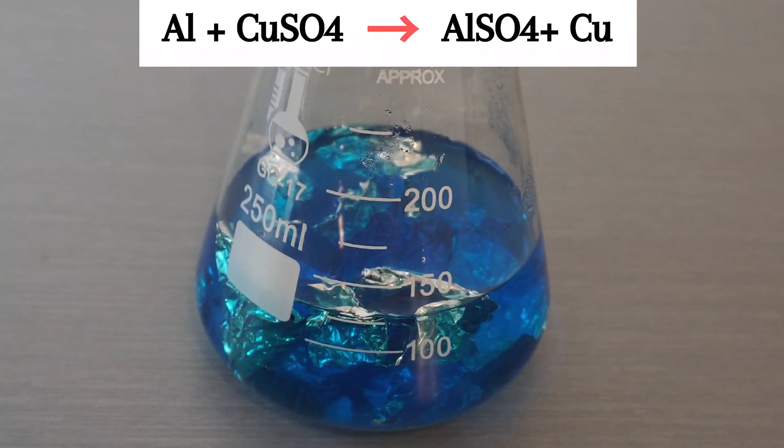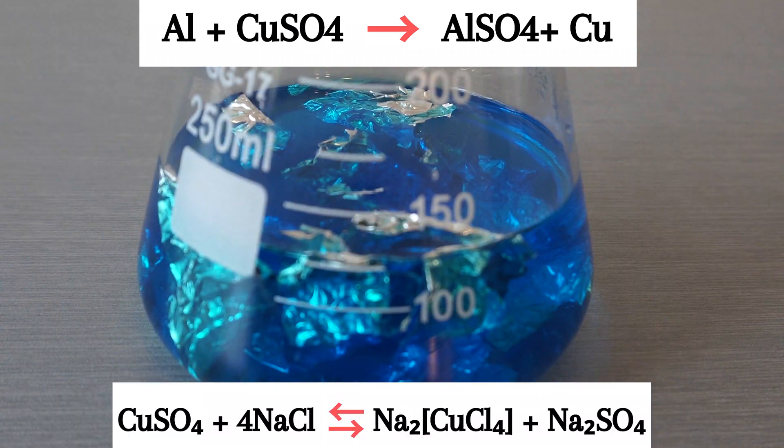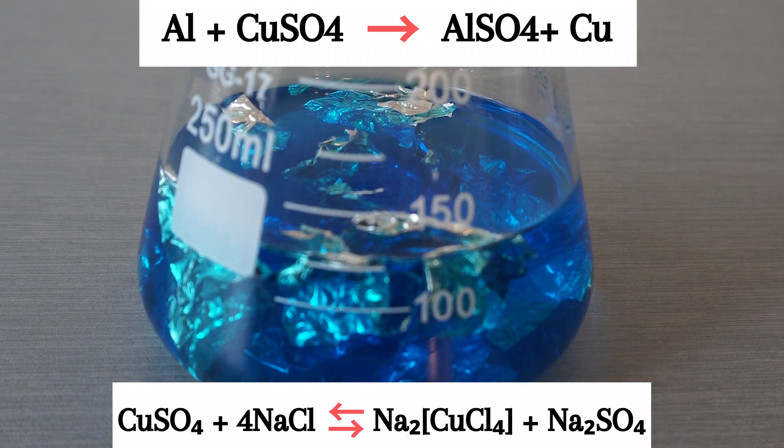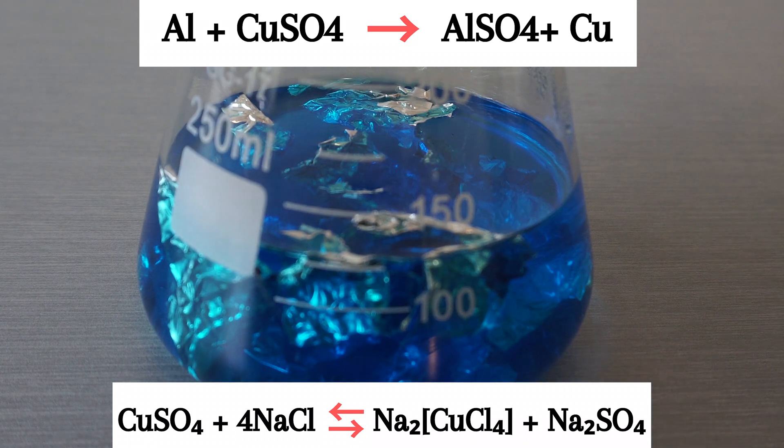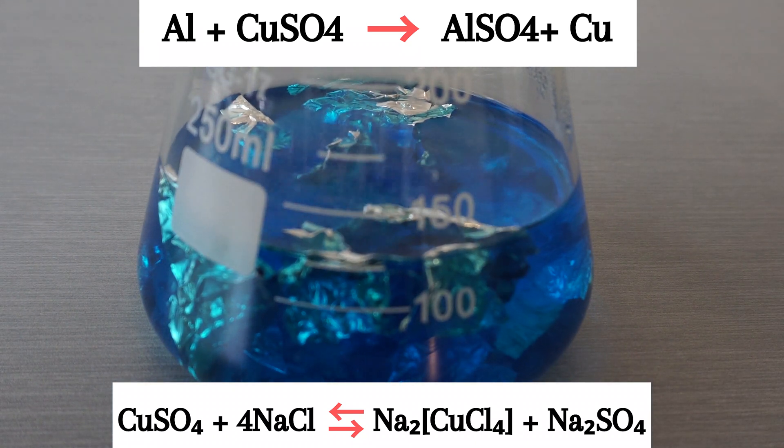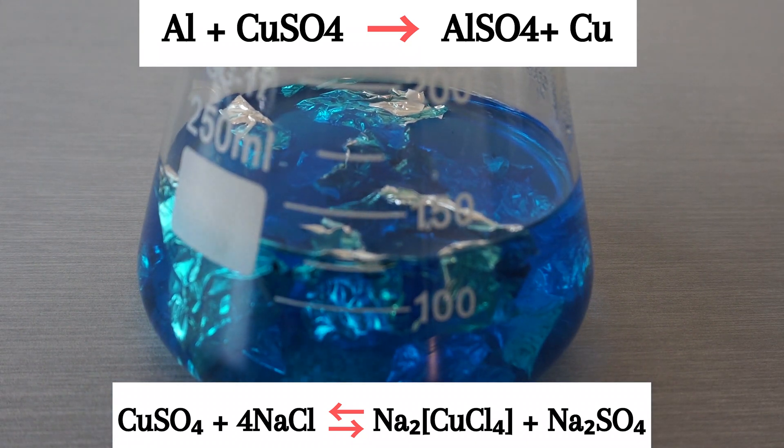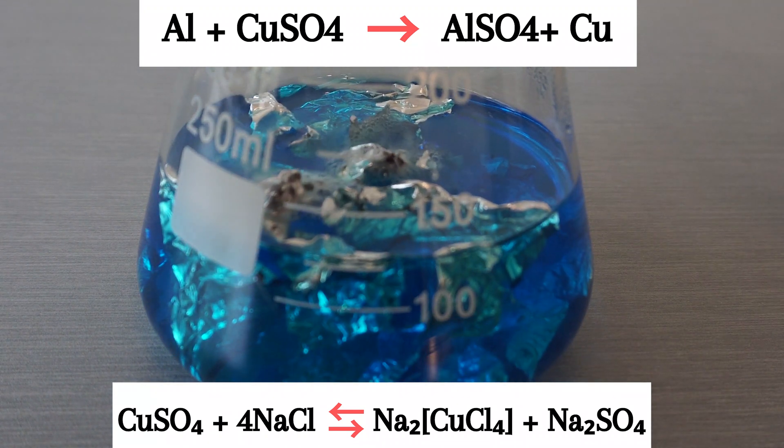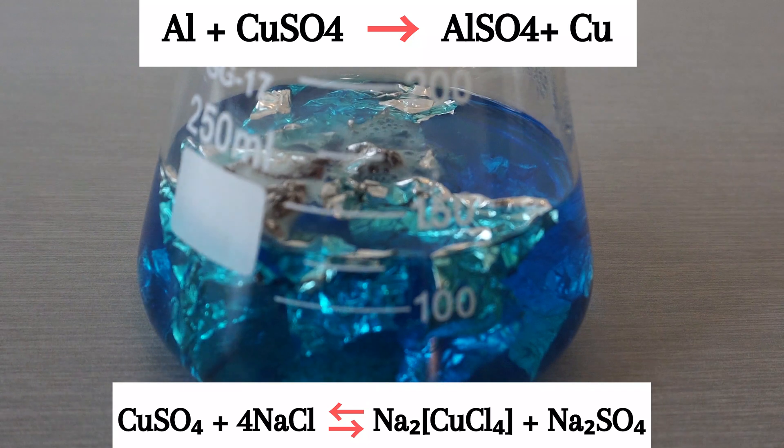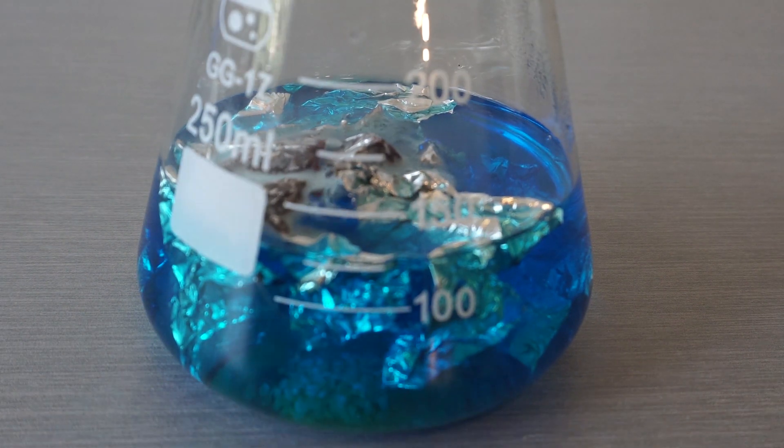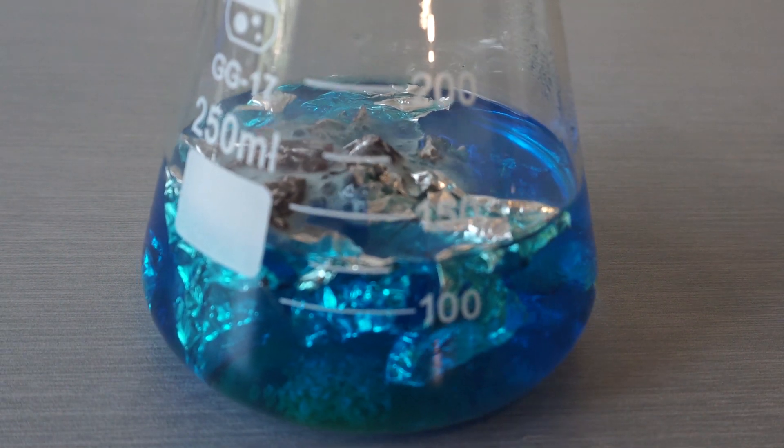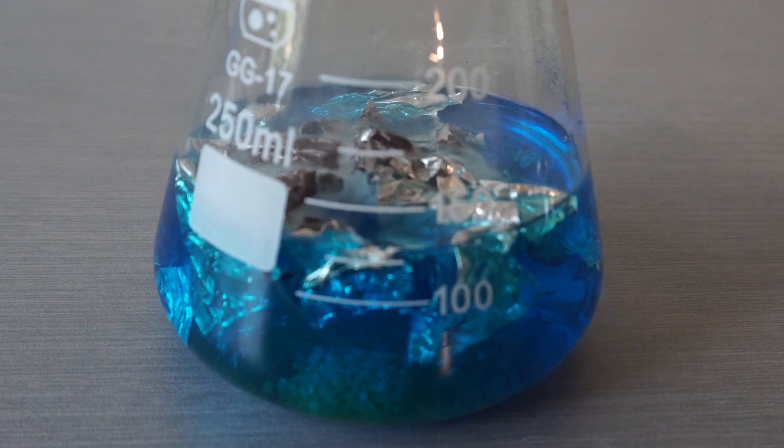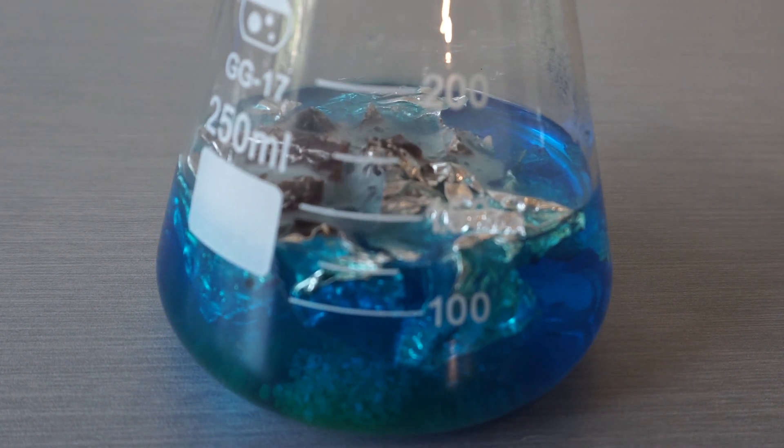Though most store bought aluminum has a layer of oxidization, so we add the NaCl to help start the reaction and remove the oxidation layer. The chloride ions act as a catalyst, allowing the reaction to take place at a faster rate. Once this layer is gone, our aluminum and copper sulfate will be allowed to react. This forms a complex salt of copper chloride, which is why the solution changes color.